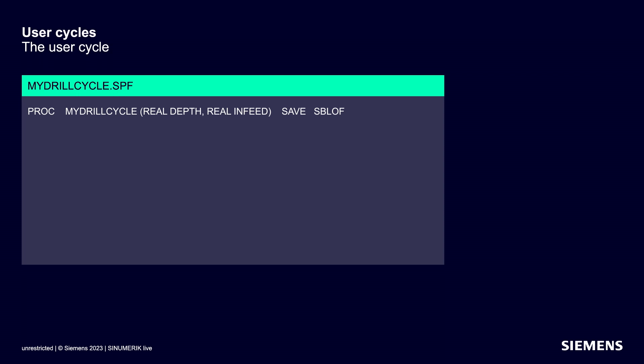The next command, SBLOF (single block off), suppresses single block processing. Single block run-in is not necessary because cycles have usually been tested. With DISPLOF (display off), the current block display is suppressed — the reason being that it is irrelevant to display the inner workings of tested cycles. For the rest of the cycle, the complete familiar CINEMERIC CNC command set is available. The cycle is not completed with M30 or M17, but with RET. This restores the modal G-codes of the calling program, which were previously saved with SAVE, on returning to the main program.